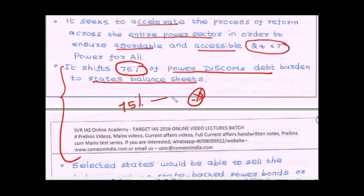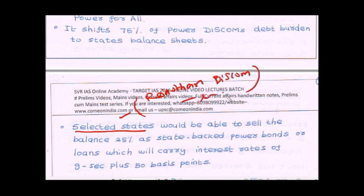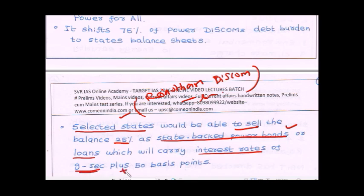75% of the debt goes into the state's balance sheet. As for the remaining 25%, not all states are included — only state power discoms which have the worst financial crisis. For example, Rajasthan's power distribution companies have the largest debt. These discoms will be able to sell the remaining 25% as state-backed power bonds or loans, which will carry interest rates of government securities plus 50 basis points.